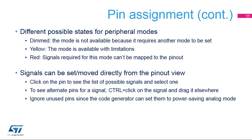Yellow state: the mode is available with limitations because some options are blocked by conflicts. For example, the USART may not be configured to synchronous mode because all selectable clock pins are taken. Red state: signals required for this mode cannot be mapped to the pinout. This may occur, for example, if a crucial signal has all its alternate pins used by other peripherals.